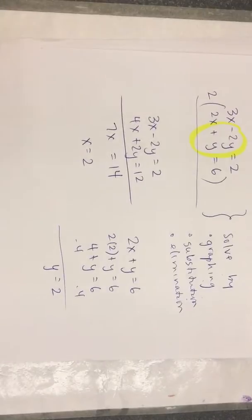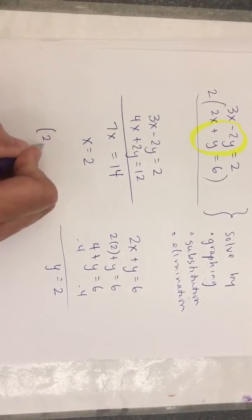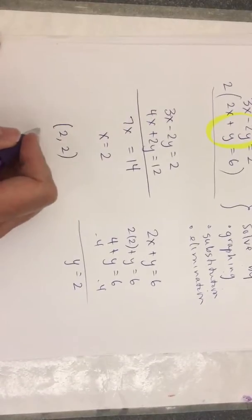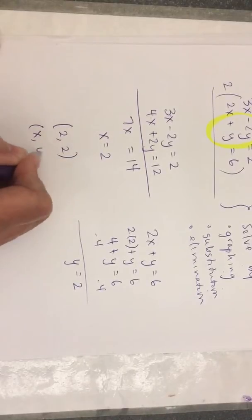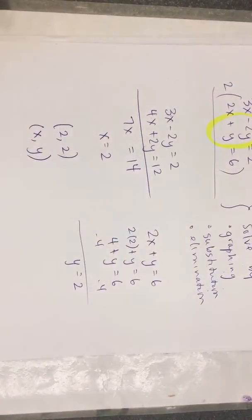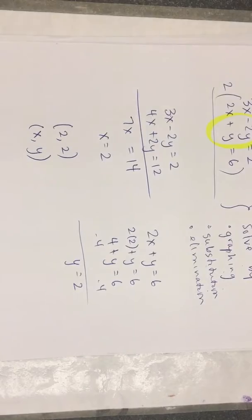The answer is the ordered pair. Make sure you know, I got an email from somebody about the quiz. They reversed the points. They did y comma x. It is in alphabetical order.